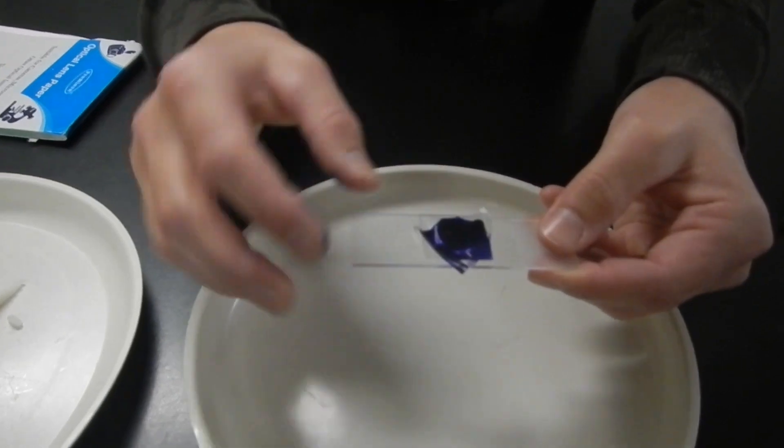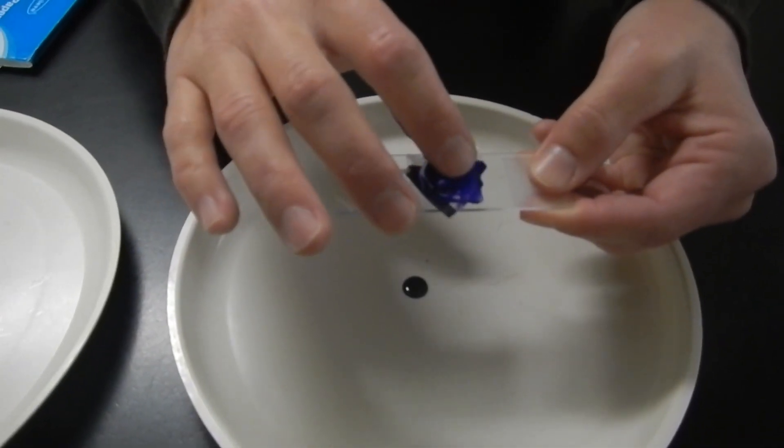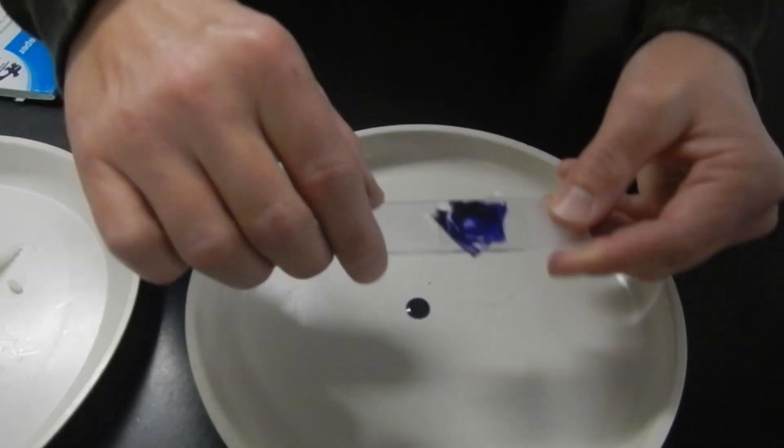Alright, once you do that step you're going to tap on the top just a little bit to try to get some of that stain inside the slide.